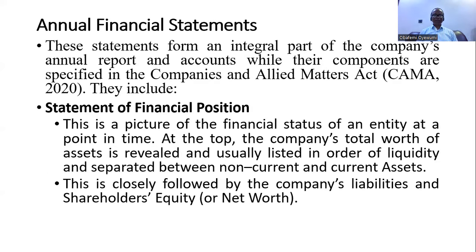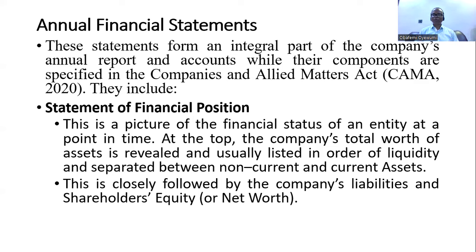Number one is the statement of financial position. This is a picture of the financial status of an entity at a point in time. At the top, we have the assets — they are identified, revealed, and we have the volume and value of each asset. This is closely followed by shareholders' equity, which talks about the liabilities and shareholders' equities of the company.